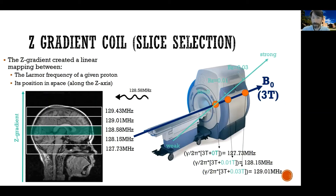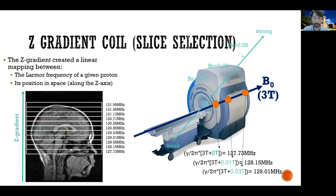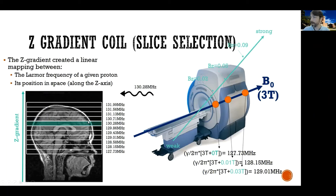If I make the gradient steeper, I can divide the head into even smaller slices. A radio frequency pulse at 127.73 would only excite a tiny slice down here, and a pulse at, say, 130.28 megahertz would excite only protons in a different slice. That's why we call this the slice selection gradient — it allows me to push into the transversal plane only protons inside one selected slice. When I receive the signal back, I'm only receiving signal from protons in that slice.